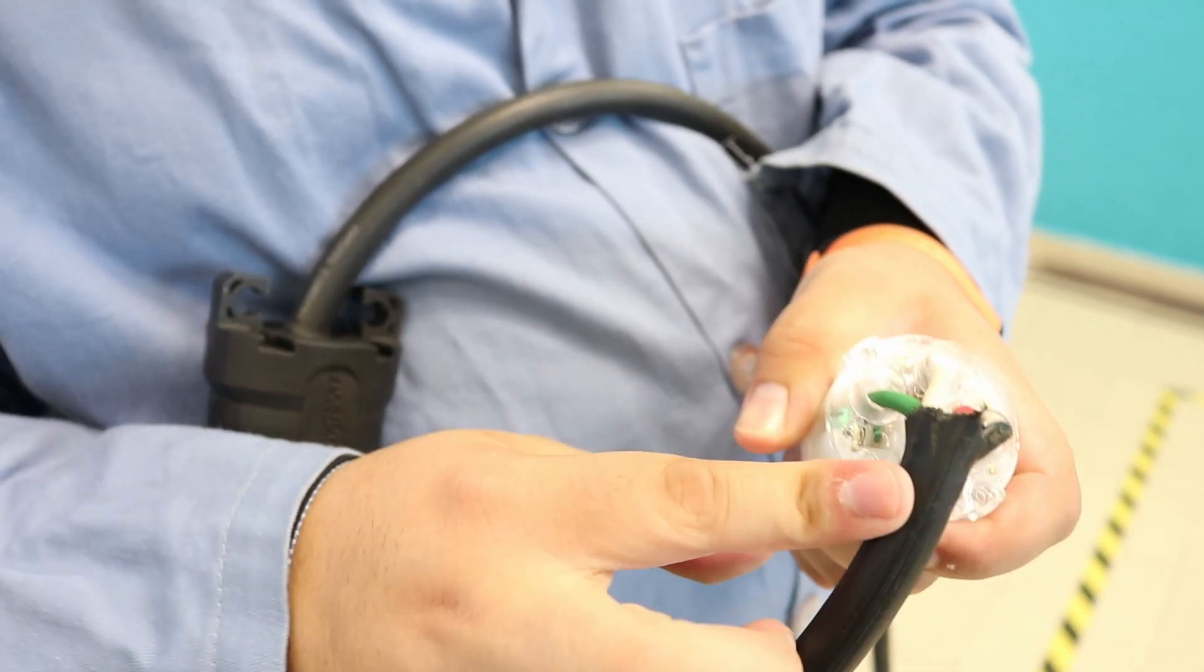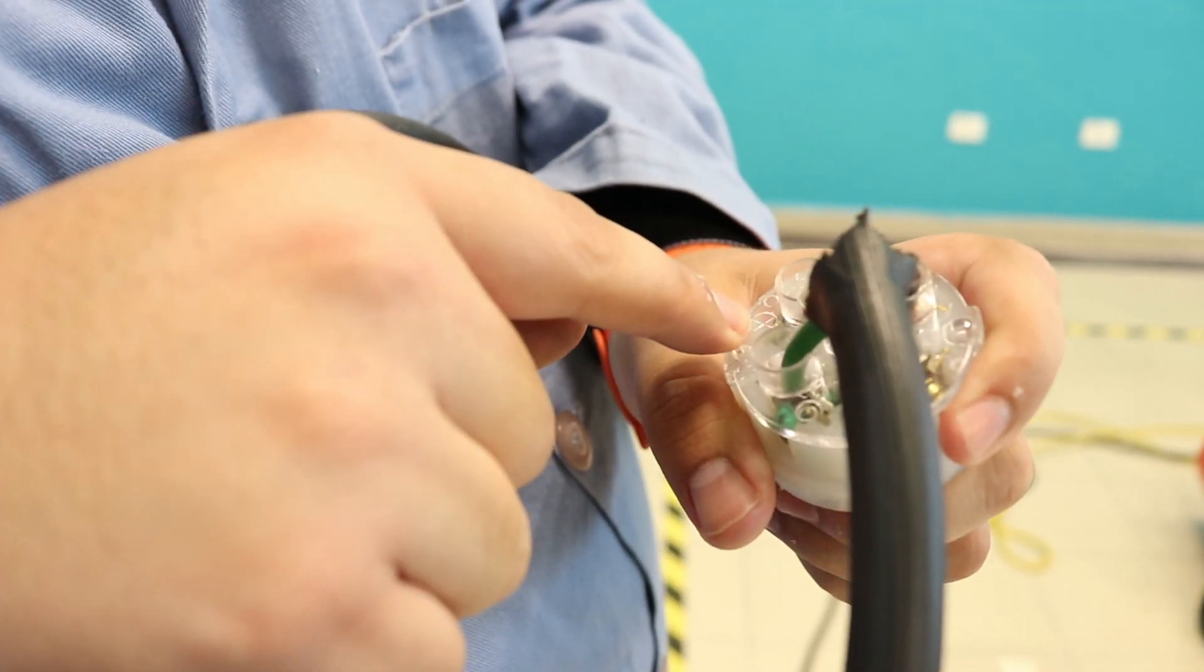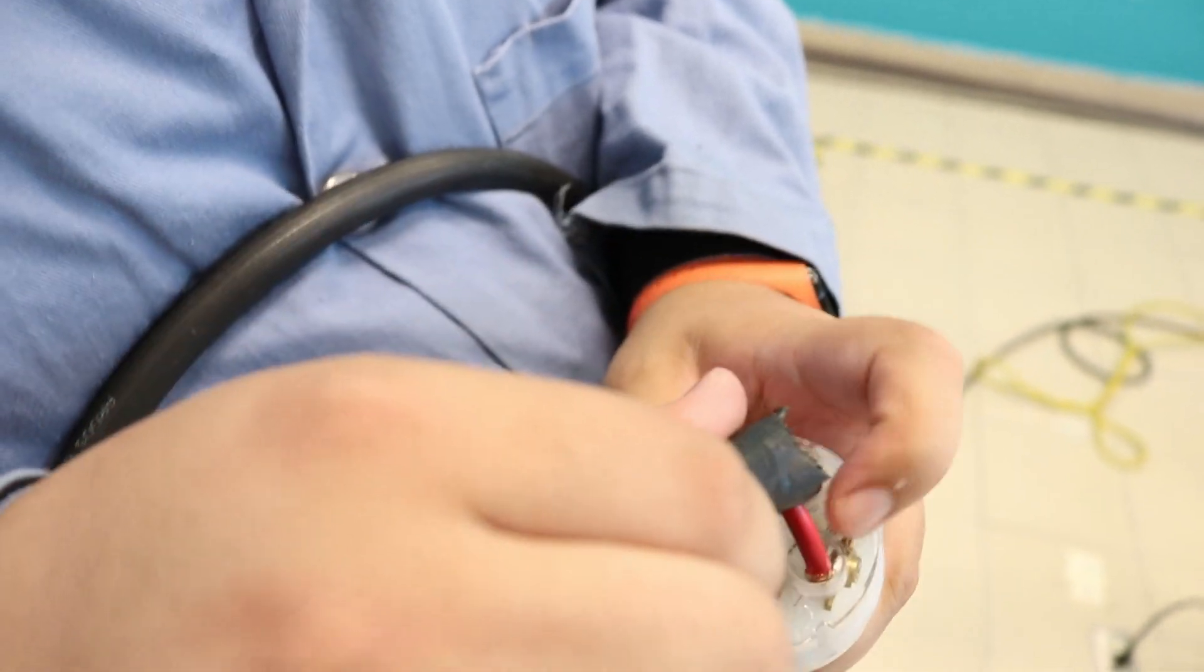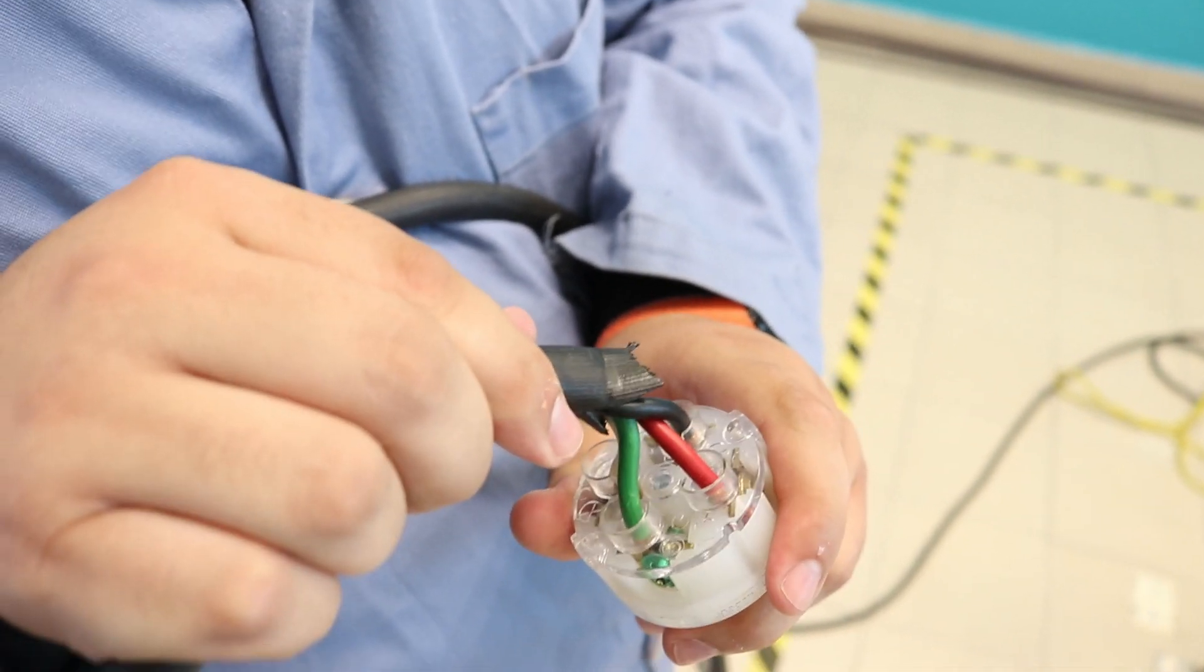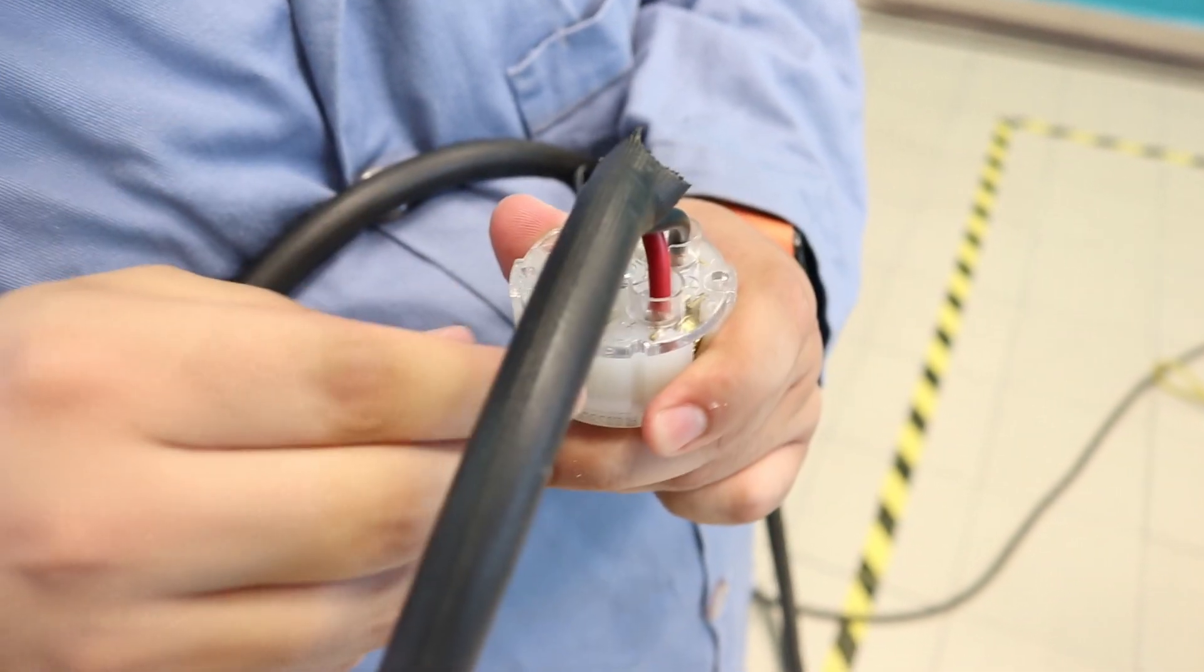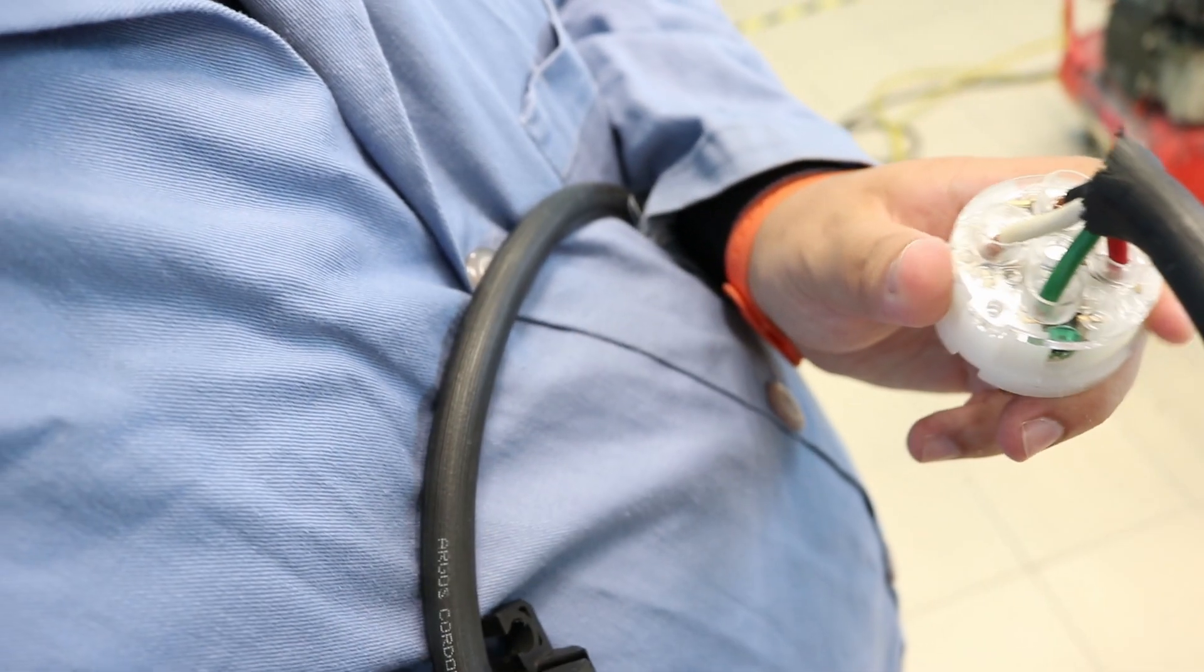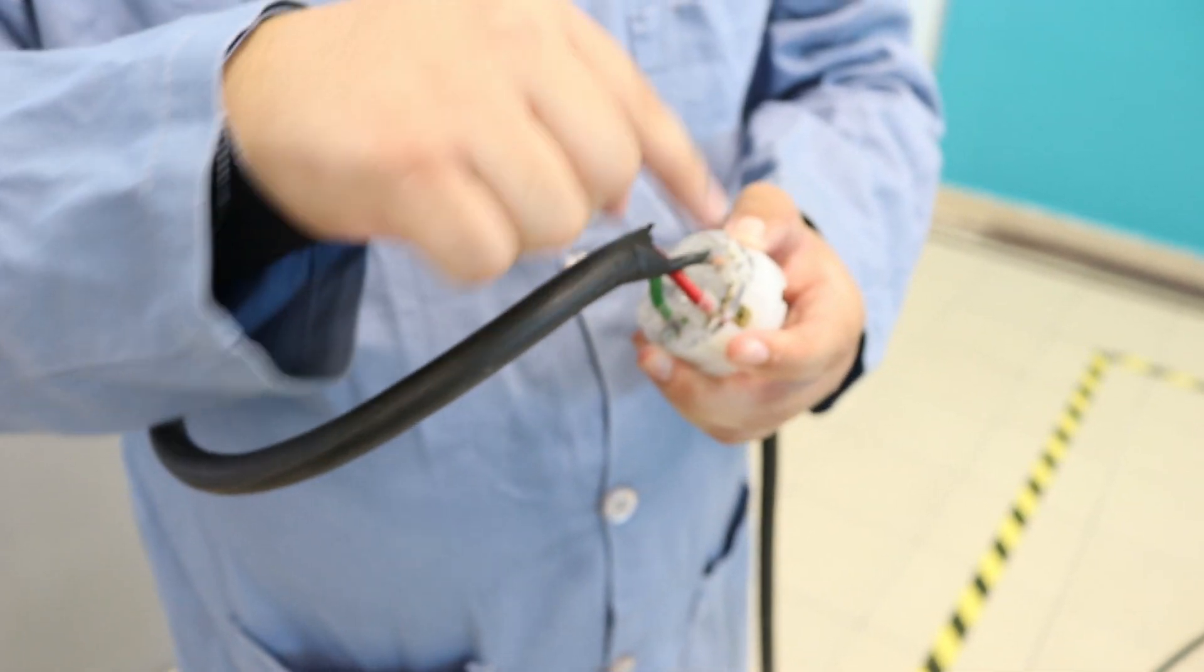We have G for ground, we have an X for one line, a Y for the other line, and a Z for the other line. One of them will be neutral. We have to make sure that we're going to connect them in the same way.